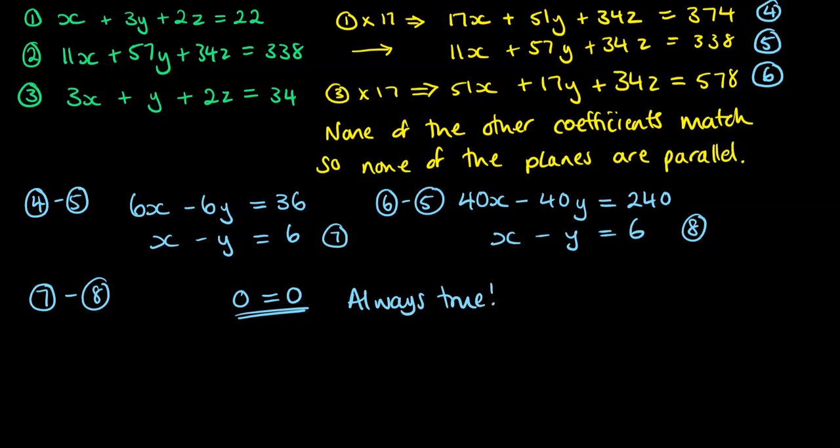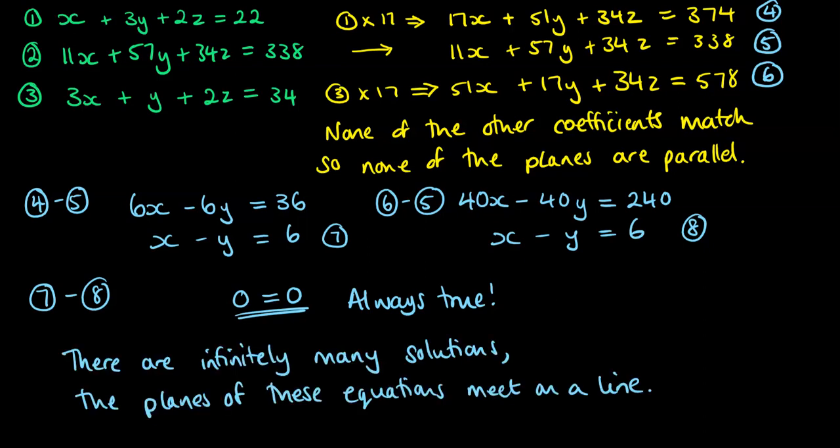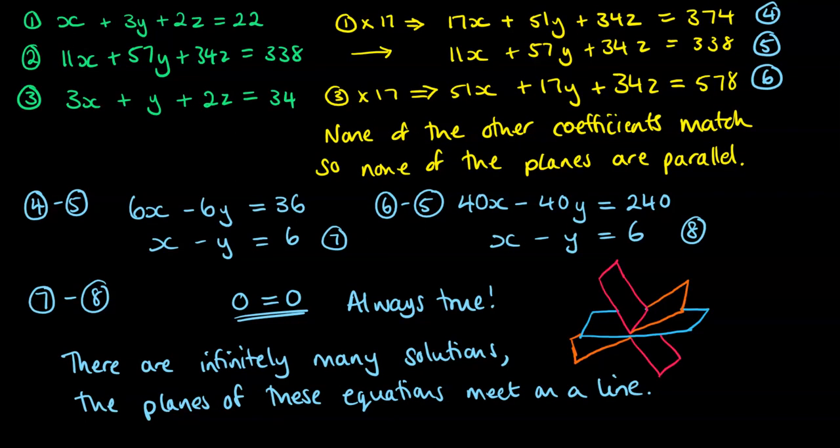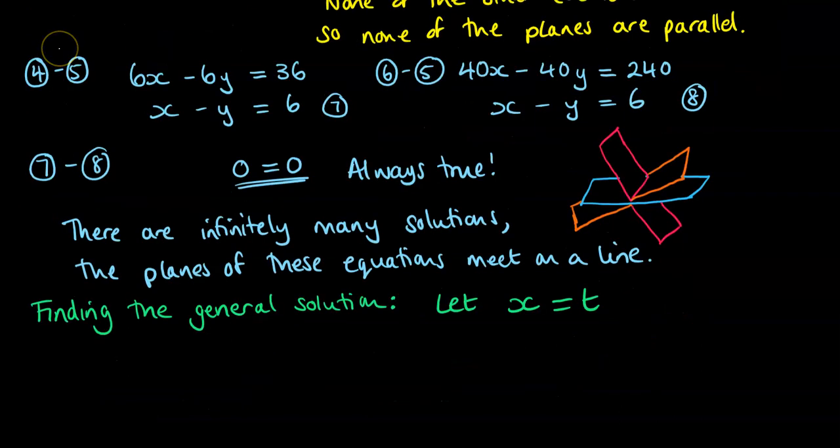Therefore, we are in a situation where we have infinitely many solutions, meaning that the planes of these equations meet on a line, like the leaves of a book. So then we need to go on and find our general solution. To do that, we let one of our variables be equal to t. I've chosen to do x. You could just as equally do it for y or z and work through from there.